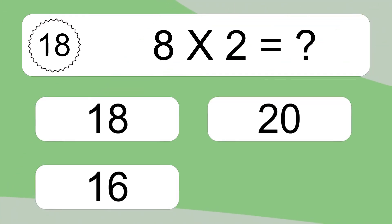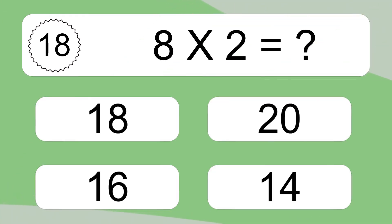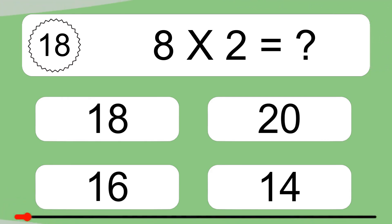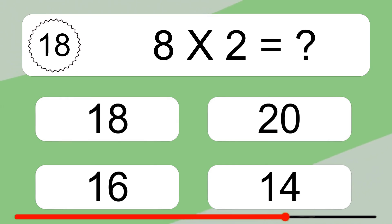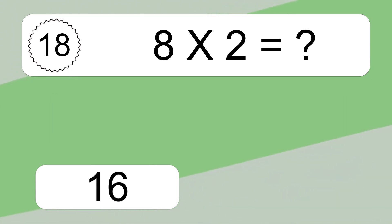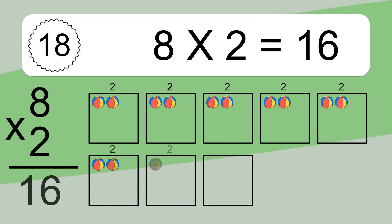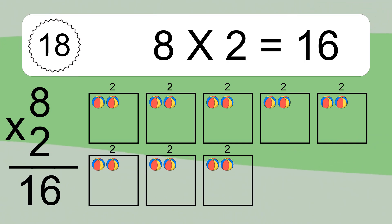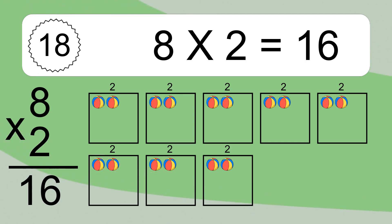8 times 2 equals what? 8 times 2 equals 16. We have 8 boxes, and each box has 2 colorful balls inside. If you count all the balls in all the boxes together, you will have 8 times 2 balls. This equals 16 balls.